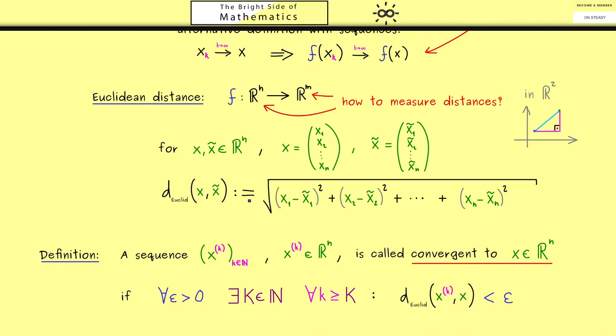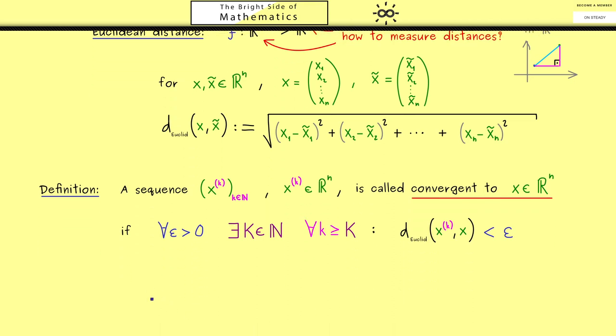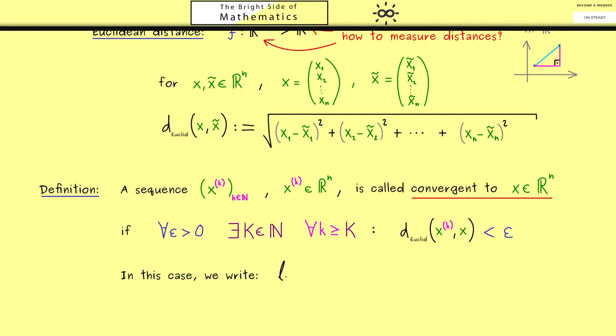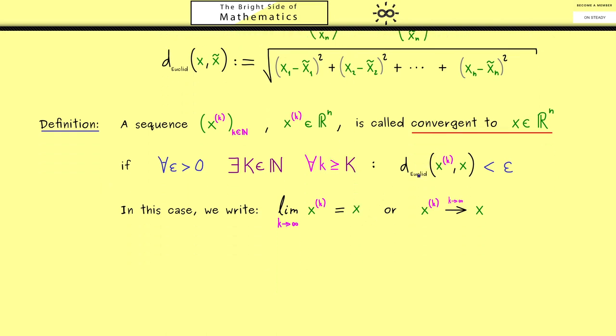You should see this is exactly the same definition as for one dimension, but now instead of the absolute value we use the Euclidean metric. Moreover, you should see if we choose n = 1 here, we get back our absolute value. Therefore, this is indeed a generalization of our concept of convergence as we learned it in the real analysis course. For exactly this reason, we are able to use the same notations. For example, if we have convergence, we can use the limit symbol: the limit of x⁽ᵏ⁾ where k goes to infinity is equal to x. Or even shorter, we can write x⁽ᵏ⁾ → x. In case there is a danger of confusion, we put k → ∞ on the arrow. So in summary, this is a new concept for the space Rⁿ—now it makes sense to talk about convergent sequences in the space.